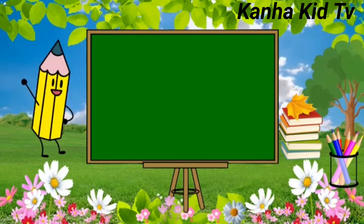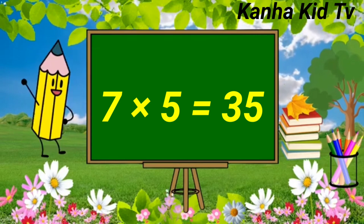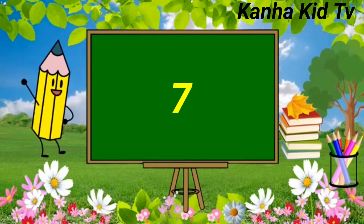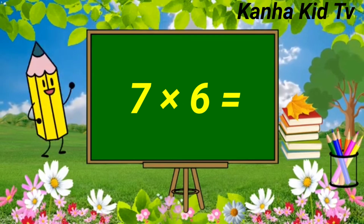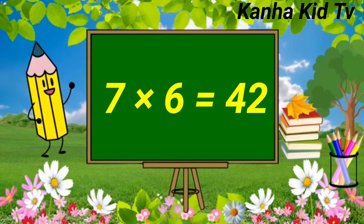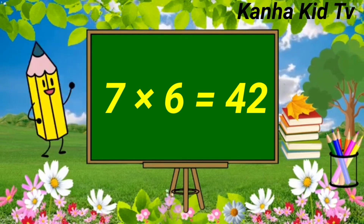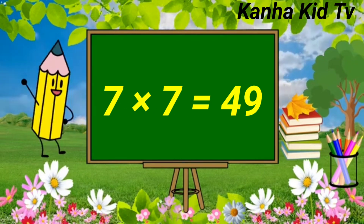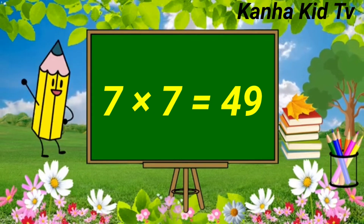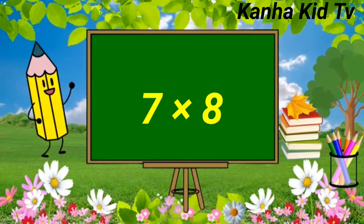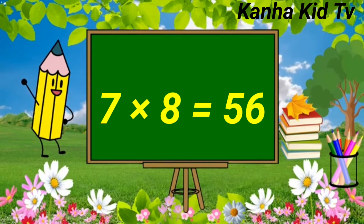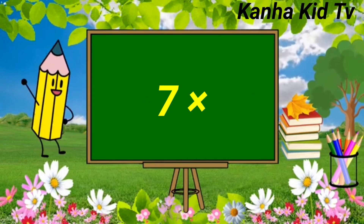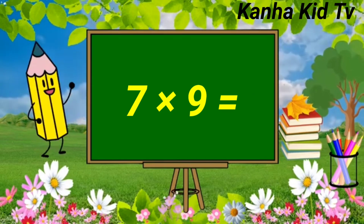7 fives are 35. 7 sixes are 42. 7 sevens are 49. 7 eights are 56. 7 nines are 63.